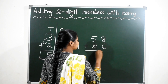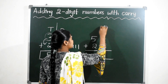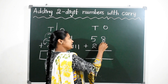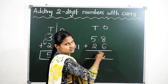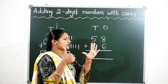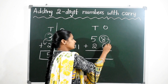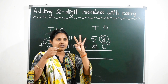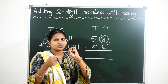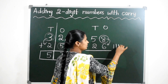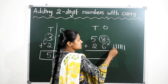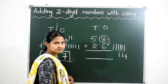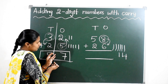Now, suppose I am going to write one more question: 58 plus 26. These are the 1s place values and these are the 10s place values. 8 plus 6 — 8 is the big number, so count after 8 to the next 6 numbers. 8 after: 9, 10, 11, 12, 13, 14. Here we got 14.